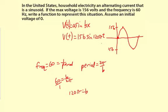And that's it. There are no translations, no reflections. So this is our function for that alternating current. Voltage is a function of time. V(t) = 156 sin(120πt).